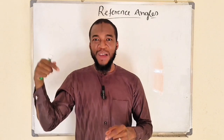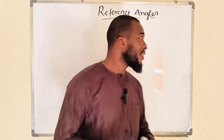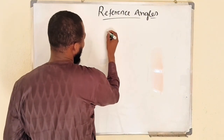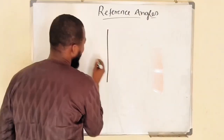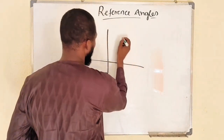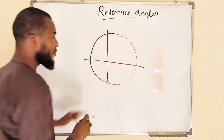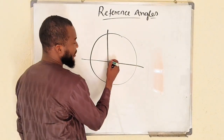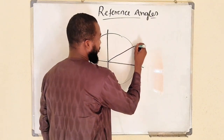Let us illustrate this here. Suppose we have a unit circle like this. We'll use this unit circle to demonstrate reference angles in each quadrant.